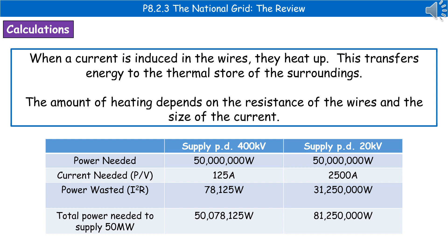The power wasted equals current squared times resistance. Using the same resistance for both cases, the power wasted at 400 kilovolts is 78,125 watts, whereas at 20 kilovolts it is 31,250,000 watts. So with the lower voltage, we waste an enormous amount of power that would need to be generated in power stations to still deliver the required 50 million watts.